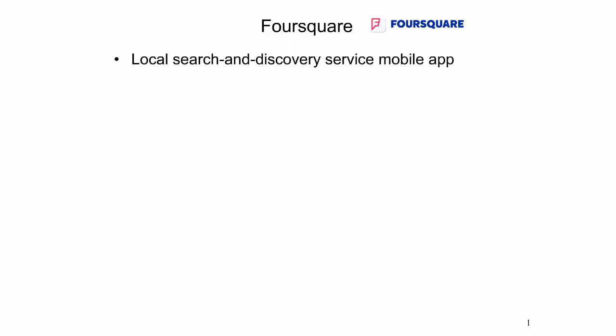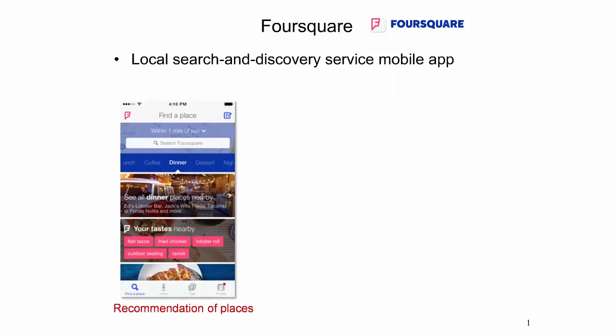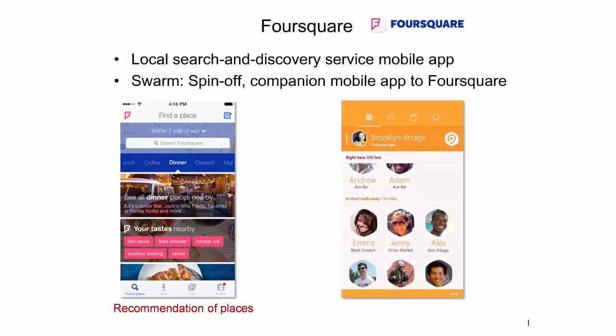Foursquare is a local search and discovery service mobile app that lets users search in their surrounding area or remote locations for restaurants, nightlife spots, shops, and other places of interest, providing personalized recommendations near a user's current location. In May 2014, Foursquare launched Swarm, a companion app into which social networking and location sharing aspects migrated. Swarm allows users to share their location with friends by checking into a specific venue, and allows broadcasting of check-ins to other networks including Facebook and Twitter. Location and check-in data collected in Swarm are used to improve recommendations in Foursquare CityGuide. Check-ins shared on tweets can be obtained from Twitter, or the complete set can be purchased directly from Foursquare.